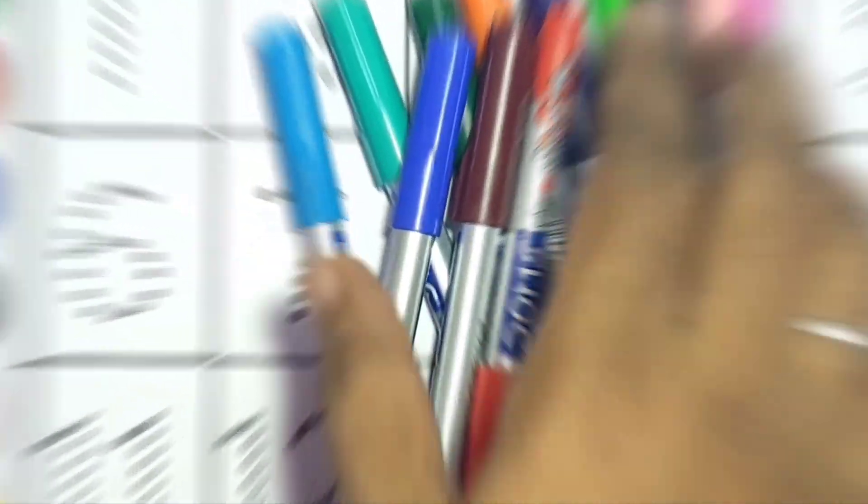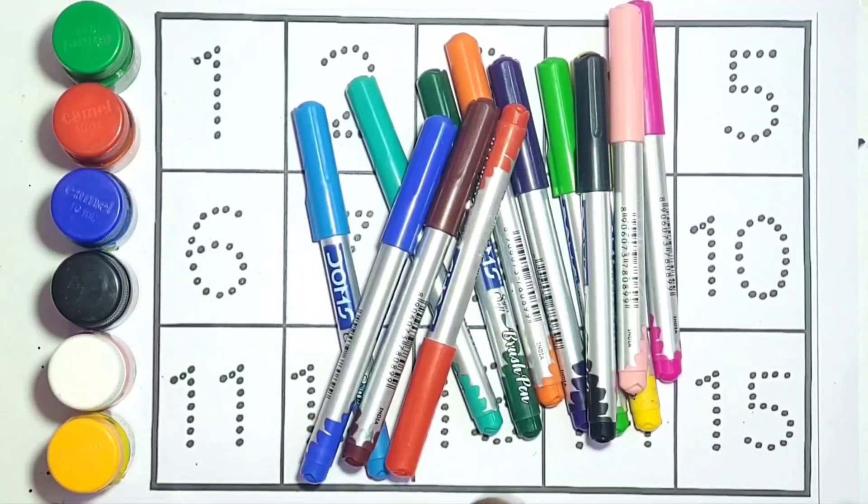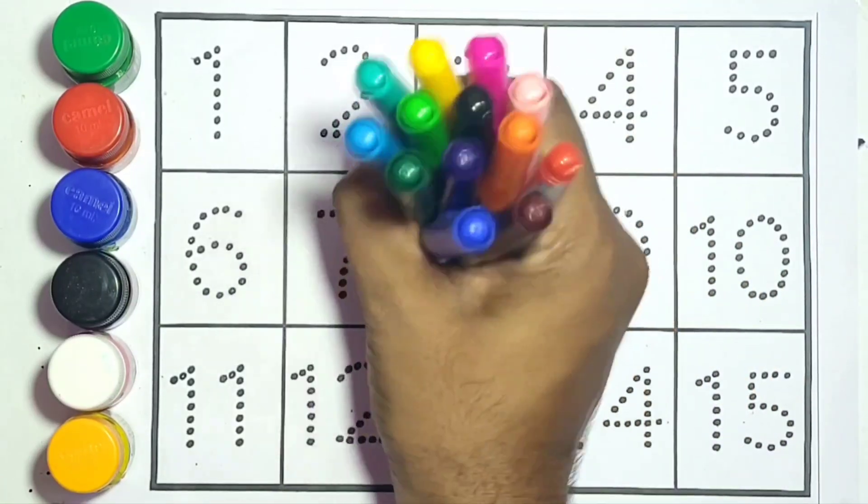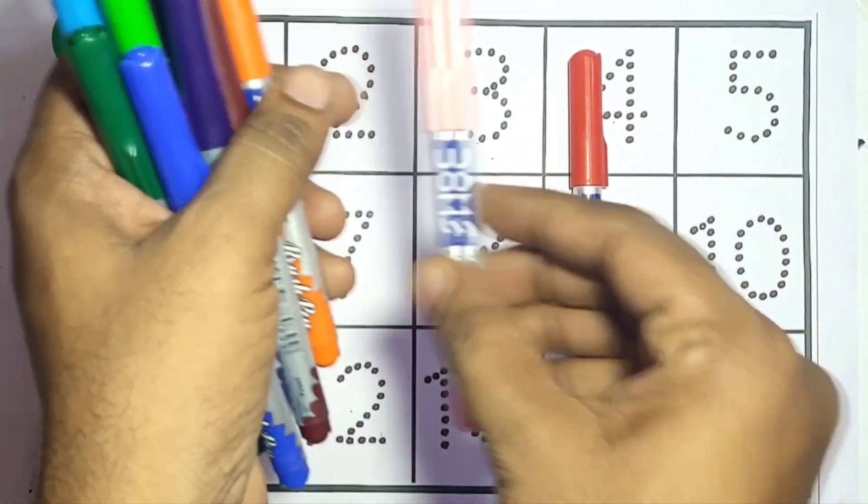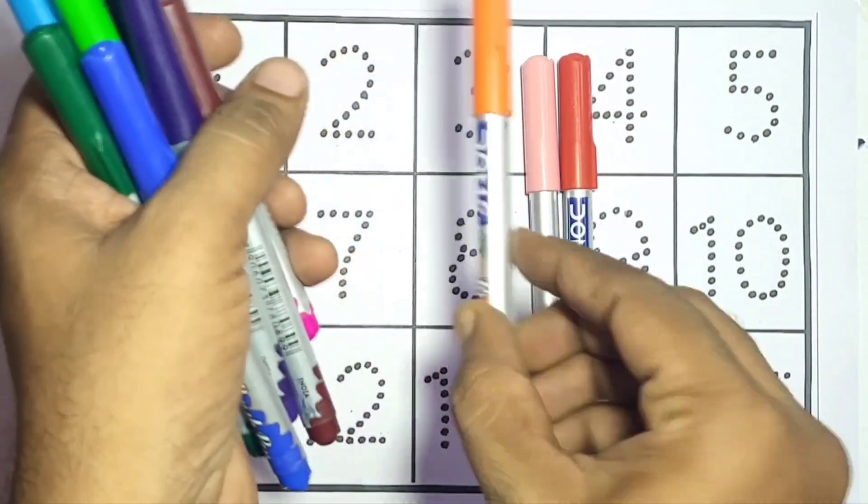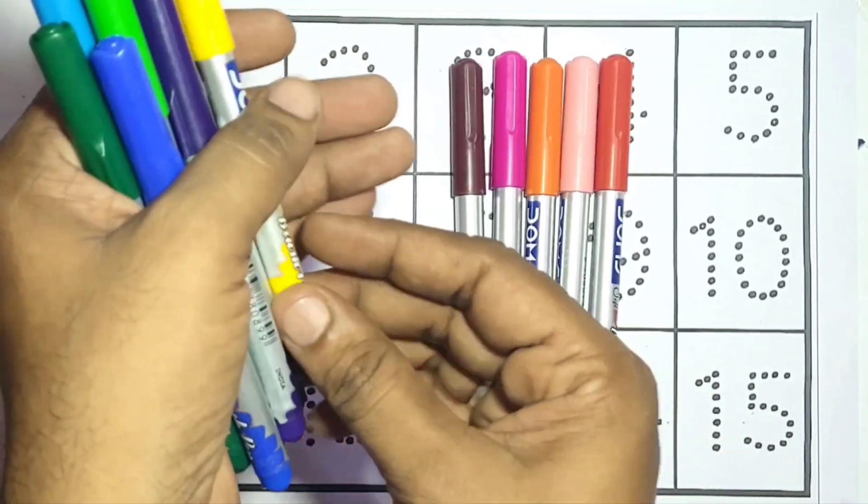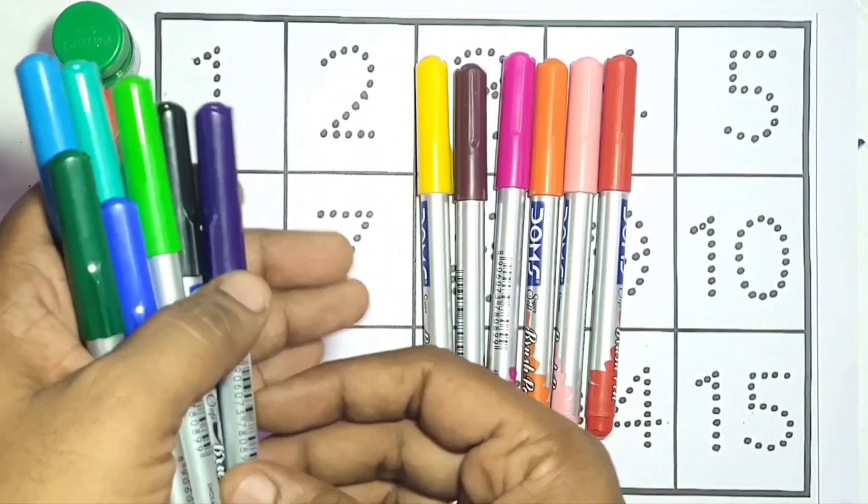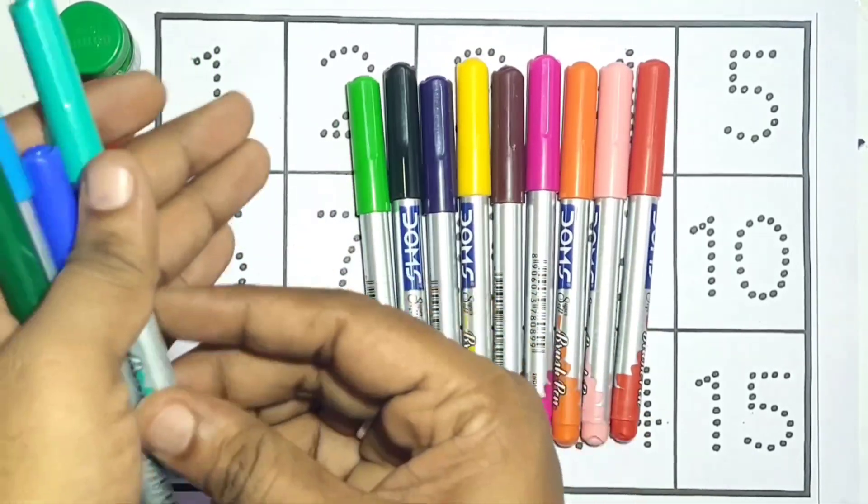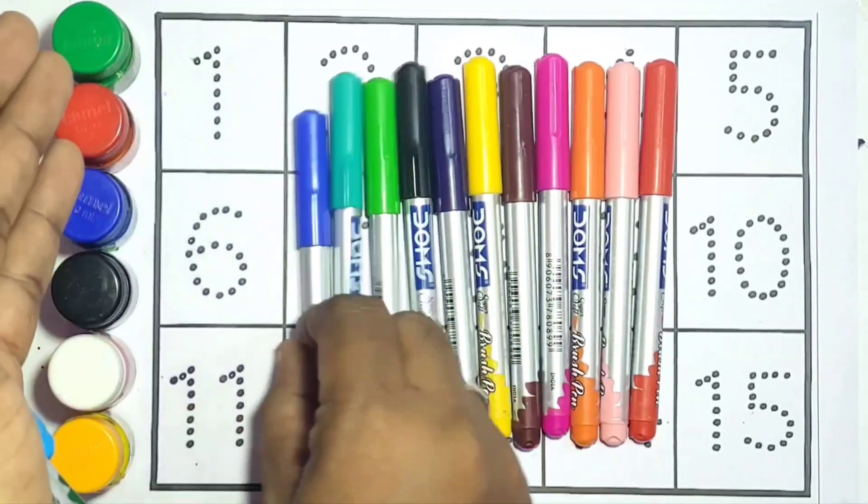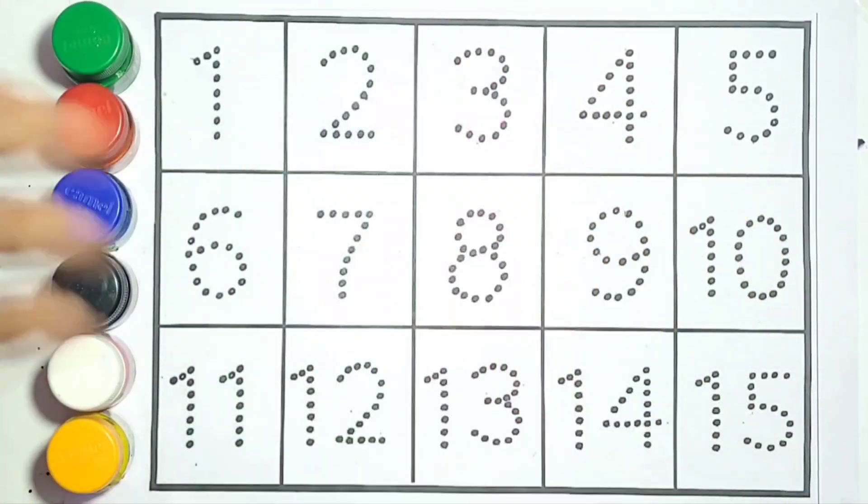Hello kids, welcome back to MG Colors. Today we're going to color numbers 1-15. First, let's look at the colors we'll use: red, pink, orange, purple, brown, yellow, violet, black, light green, color green, blue, sky blue, and green.